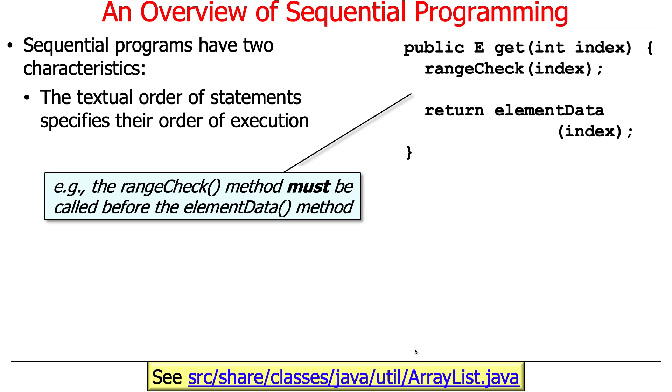Here's a very simple example from the ArrayList source code from Java. This is the get method on Java's ArrayList. You can see here it first calls range check to see if the index is in bounds. And assuming it is, and no exception is thrown,